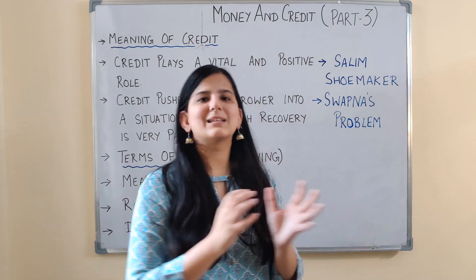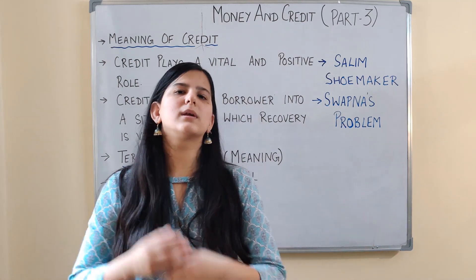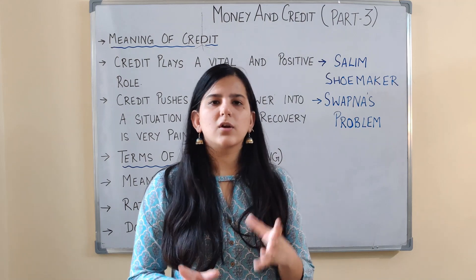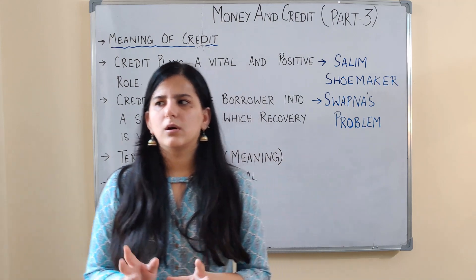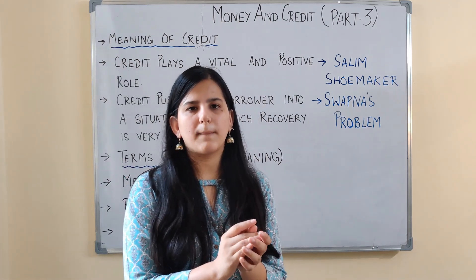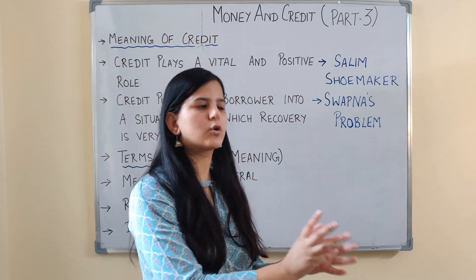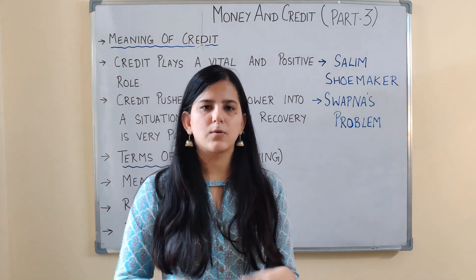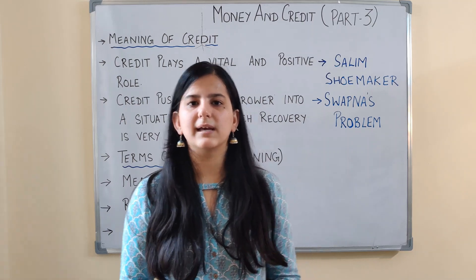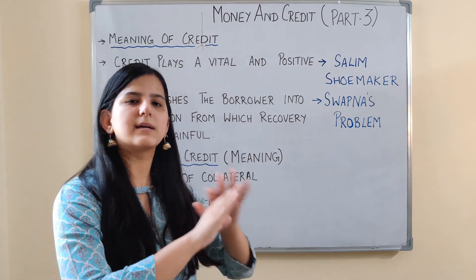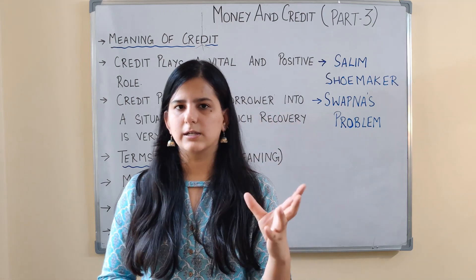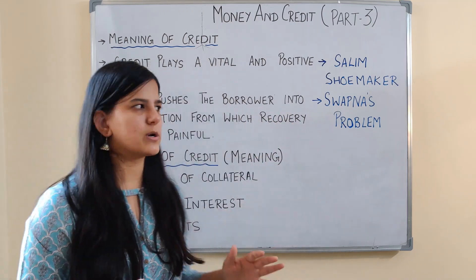Collateral is the borrower's way of ensuring the lender that if the loan cannot be repaid, the lender can take that asset and sell it to recover the money. So collateral is a guarantee: if I am not able to pay you back, you can sell this asset. That is what collateral means.